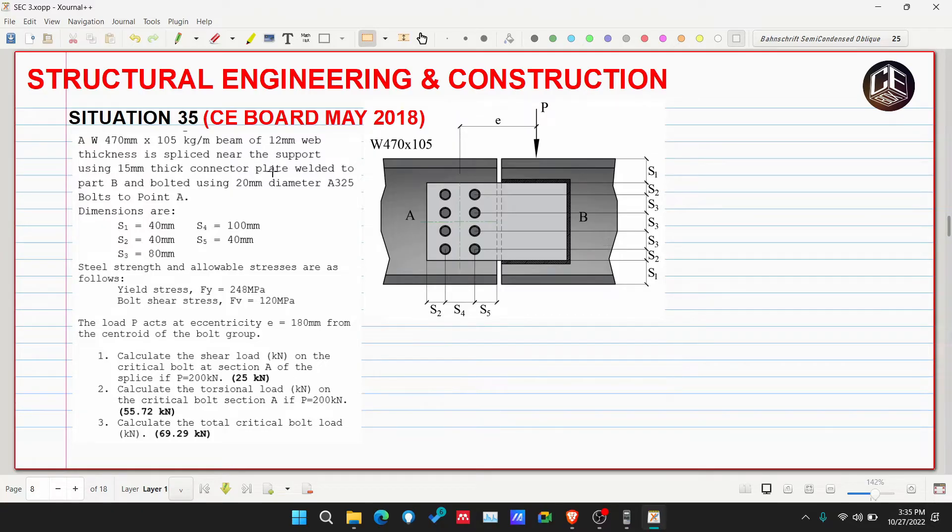These are the dimensions S1 to S5. S2 is 40 millimeters, S5 is 40 millimeters, S4 is 100, then S1 is 40, and S3 is 80 millimeters.